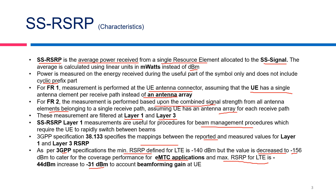The maximum RSRP for LTE was minus 44 dBm, which was also increased to minus 31 dBm to consider the beamforming gain at the UE side. Because in 5G, the UE is expected to have more antenna ports and will therefore be able to receive more power in the downlink.